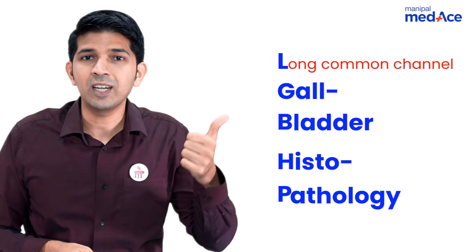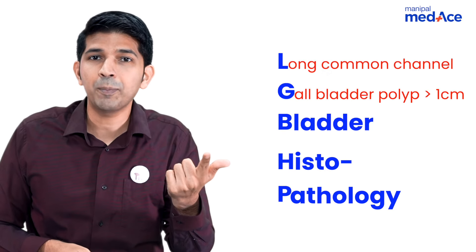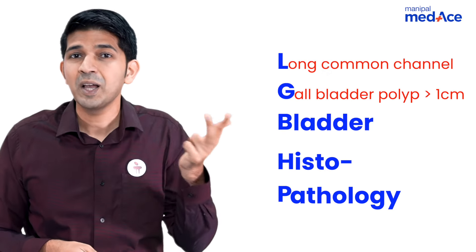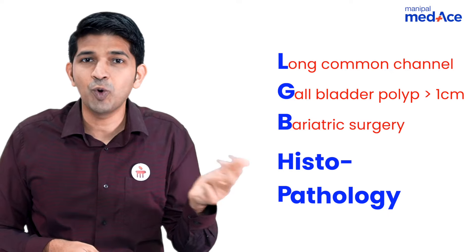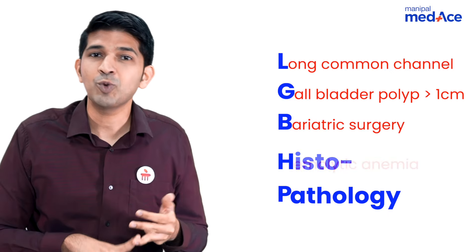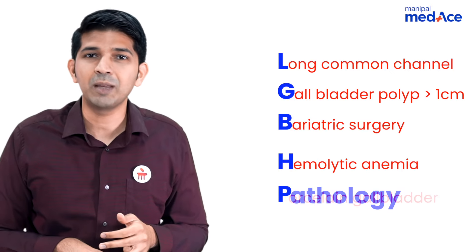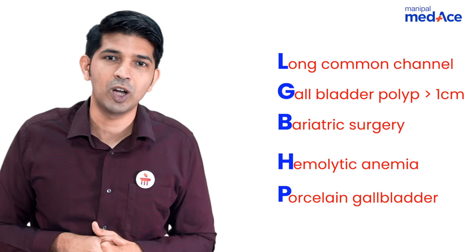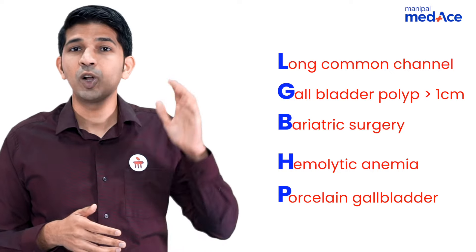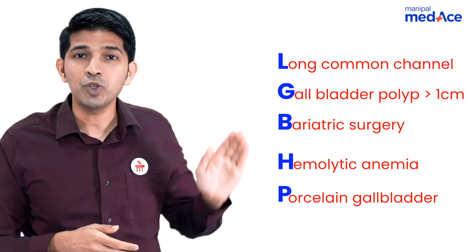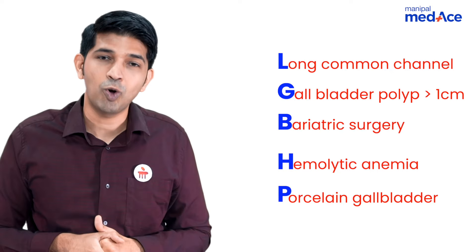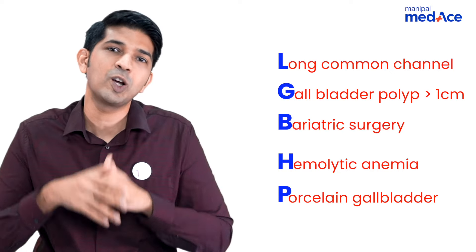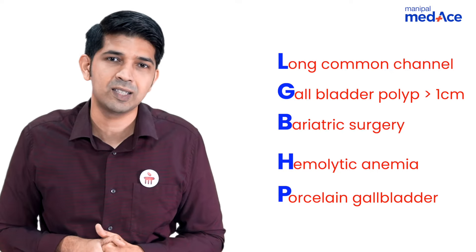The indications for prophylactic cholecystectomy are: long common channel, gallbladder polyps more than one centimeter in size, patients undergoing bariatric surgery, patients who have hemolytic anemia, and patients who have a porcelain gallbladder. Most of these are also risk factors for developing gallbladder cancer.